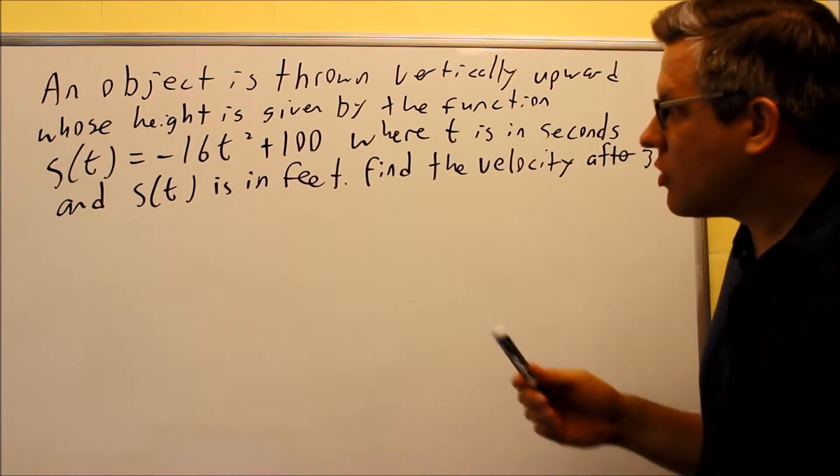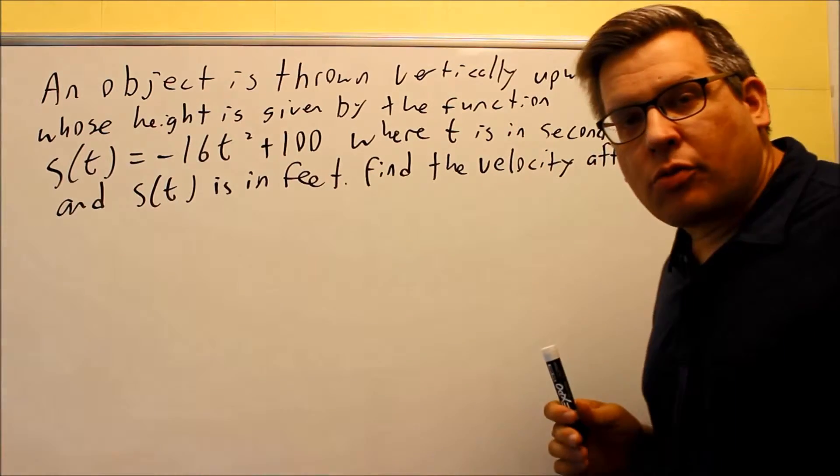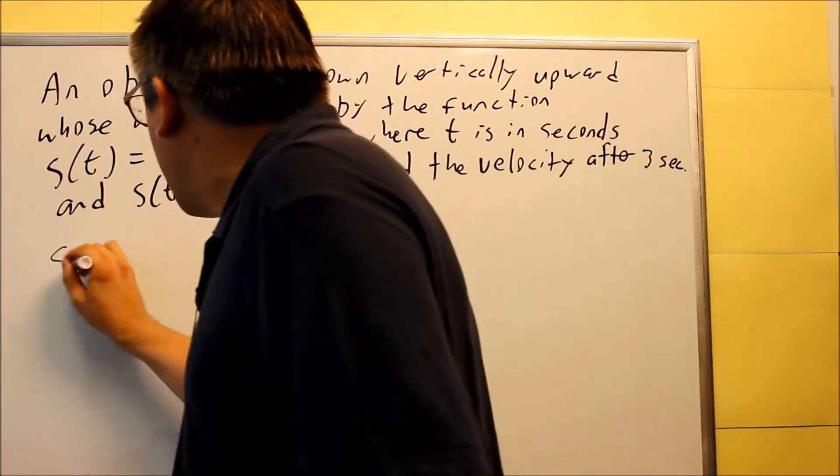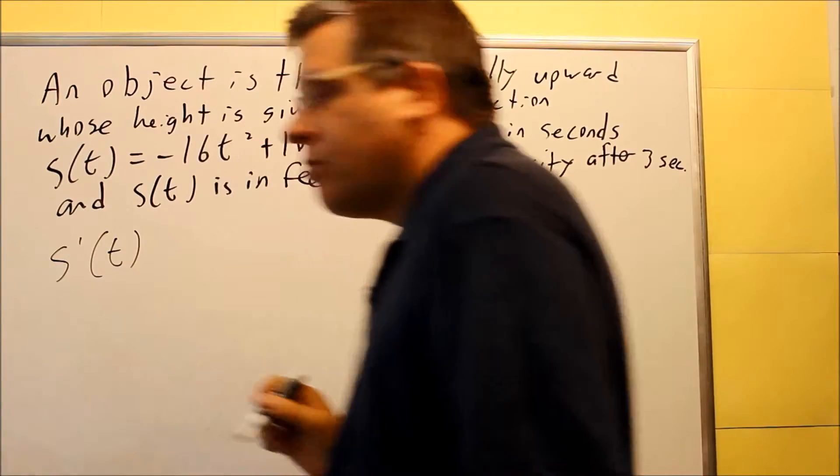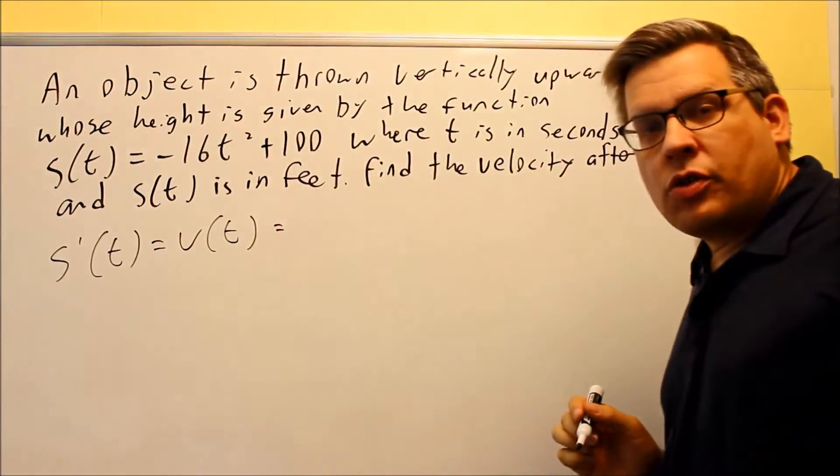To do that, we have to first find the velocity function. And then once we're done with that, we're going to put in 3 seconds into that. So to do this one, we know that the derivative of position is our velocity.